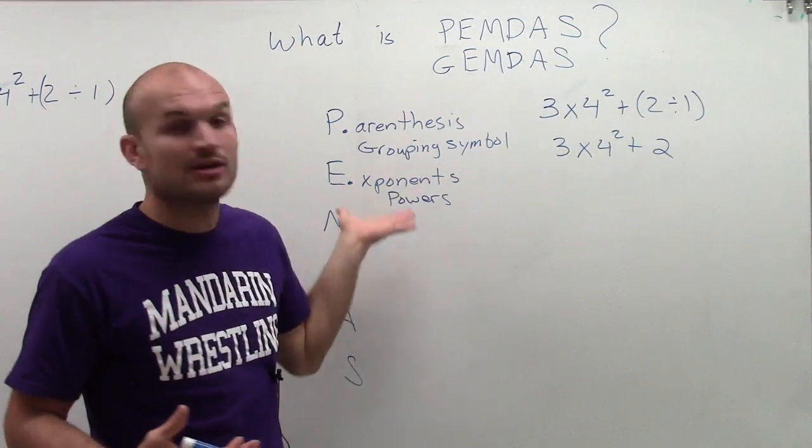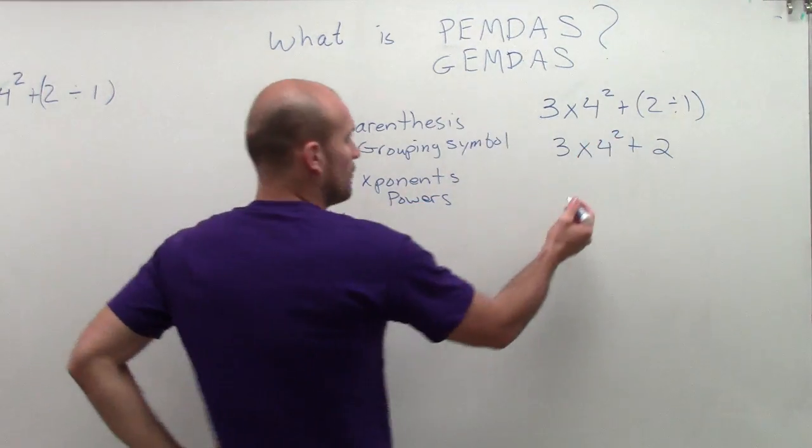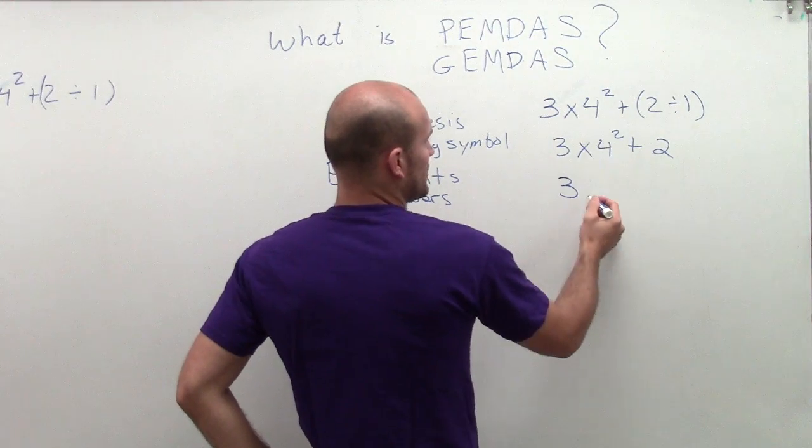So the next thing is we just want to do exponents or the powers. So 4, I see I have 4 raised to the second power would be 4 squared. So 4 squared is 16.